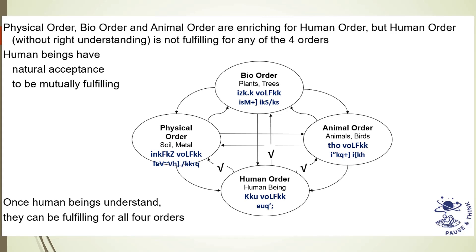We have to fulfill all four orders. Even the bio order and physical order can be fulfilled by the human order. Ask yourself the question: what is naturally acceptable to you — to enrich these four orders or to exploit them? Of course, we will say we have to enrich all four orders. When we have the feeling of exploitation of any of the four orders, that feeling itself is not naturally acceptable to us. Even the word exploitation — if we are having the feeling of exploiting something, that is not naturally acceptable.